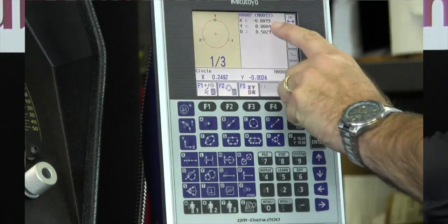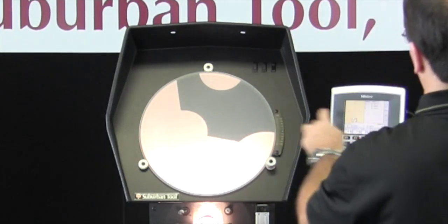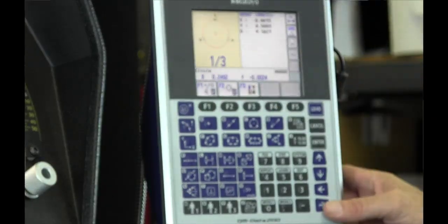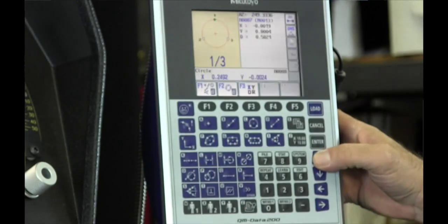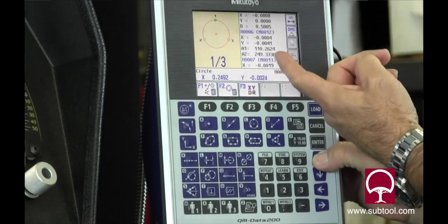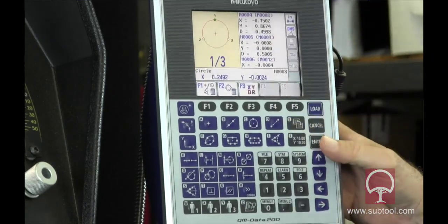It gives us the theoretical center of that circle out here, and it gives us the diameter, five hundred and two thousandths. You can go back and see any of the measurements you've taken. You just scroll back, and it shows you they're all numbered in here. It tells you what they are.